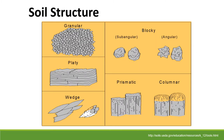Soil textures also affect soil structure — whether it's granular, platy (where it looks like one layer on top of another), angular or blocky, prismatic (where soils look like little prisms or columns), or wedge-shaped soils that fit together like pieces. All of these structures are created by the bedrock type or parent material and the soil texture.